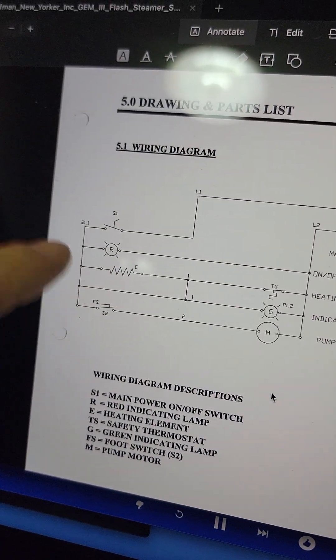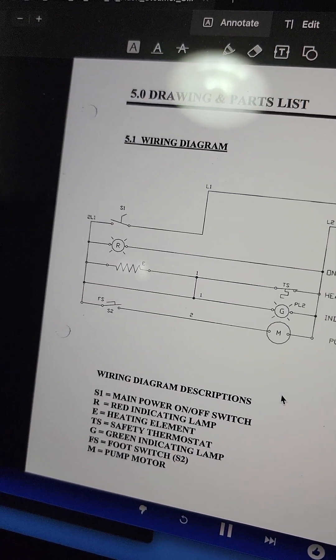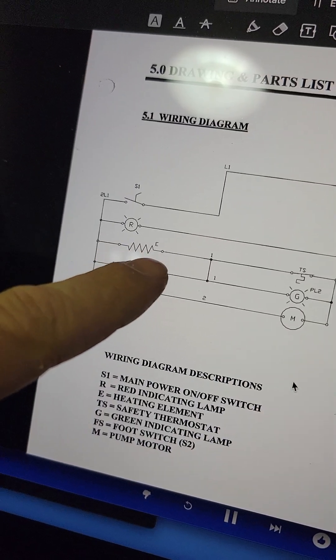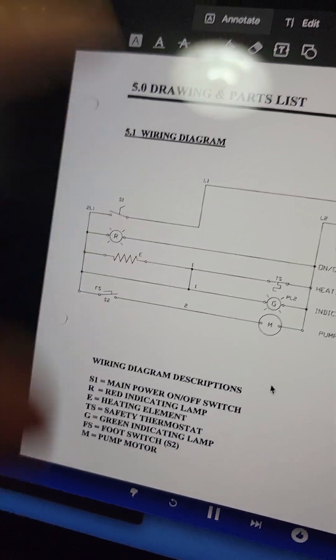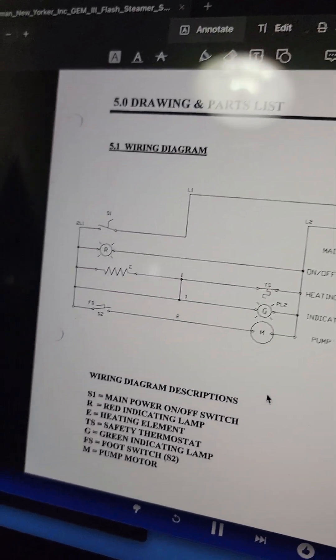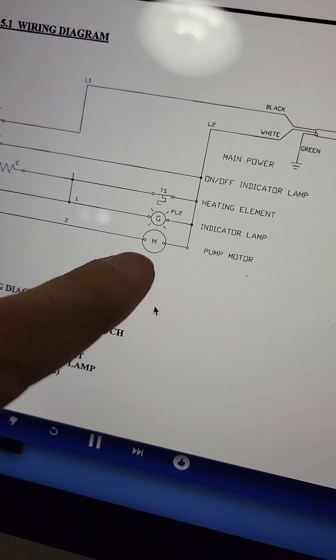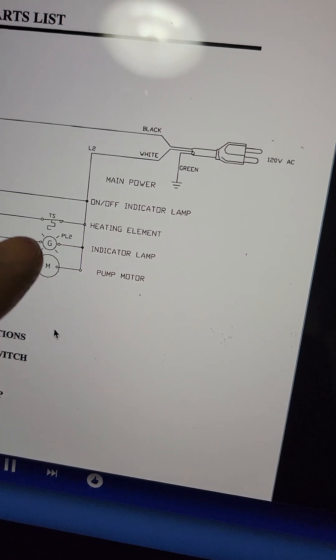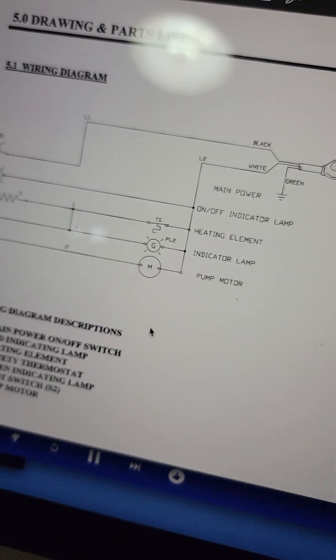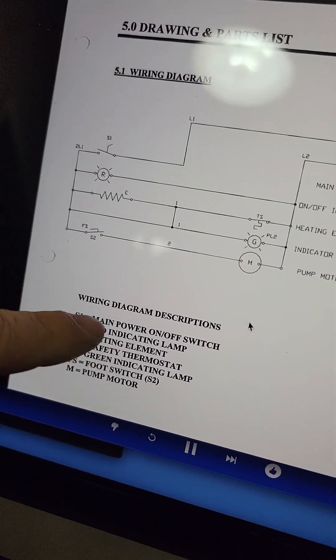The people that made the schematic - I don't know, maybe they're drunk - this resistor-looking symbol here is a heater. FS is foot switch (switch 2), M for motor (pump motor), and there's your lines just going around. Right here is the wiring diagram description of what each thing is.